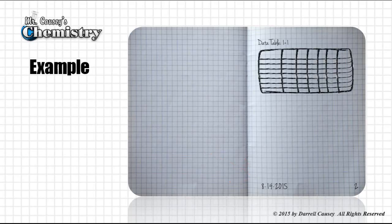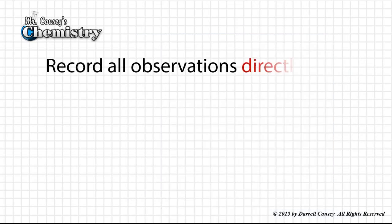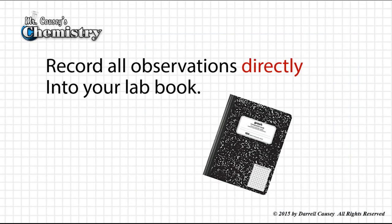Remember, we only use right-hand pages and put in the date. There's a data table, but that's not a very good data table. Let's use rulers whenever we make a data table or graphs. There you go. Looks much better. Record all observations directly into your lab book whenever you're doing a lab. Don't write it other places.